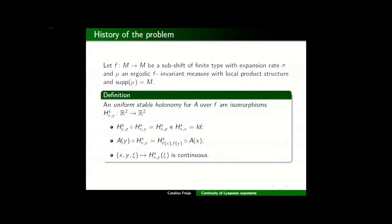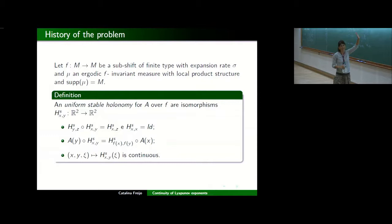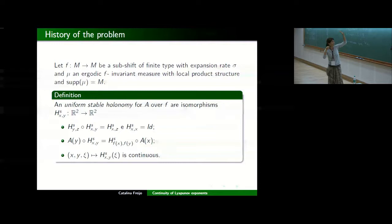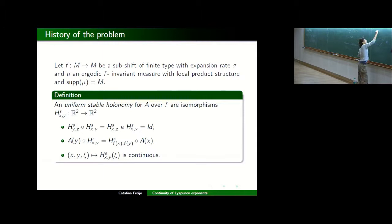For that we have to bring up to knowledge an old friend of ours, that is the holonomy mapping. I don't want, I don't like slides with so many words, those are too much words. So here we are just saying that we are going to take in the base a shift, and we are going to add some properties in the measure as having local product structure and being fully supported. And this definition, it's really what it's saying to us.